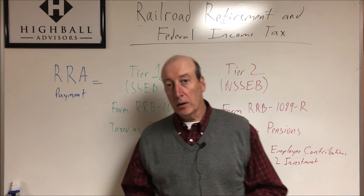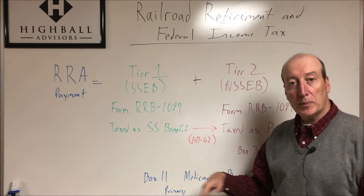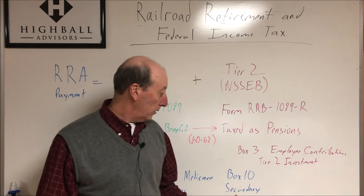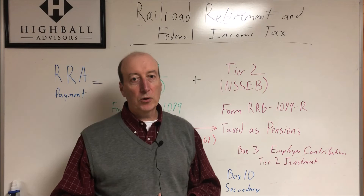One other thing for retirees 65 and up who are on Medicare: on your RRB-1099, Box 11 will show how much has been taken out of your Railroad Retirement annuity for Medicare. Sometimes, though, it's not on that form — it will be on the RRB-1099-R in Box 10. So if you don't see it on one form, make sure you find it on the other.